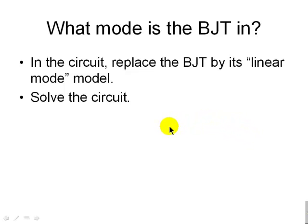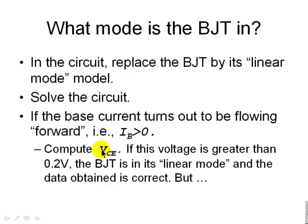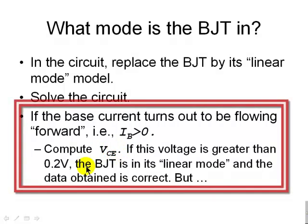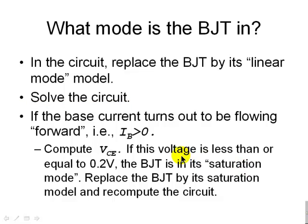But what happens when IB is not negative? If IB is a positive value — flowing in the right direction — then we compute VCE, the collector-to-emitter voltage. If that voltage is greater than 0.2 volts, the transistor is in linear mode. However, if that voltage is less than or equal to 0.2 volts, the BJT is in saturation mode. In that last case, we replace the BJT by its saturation model and recompute the entire circuit.